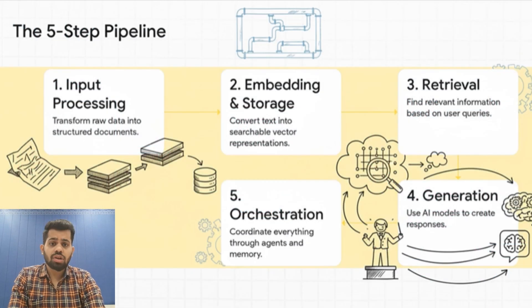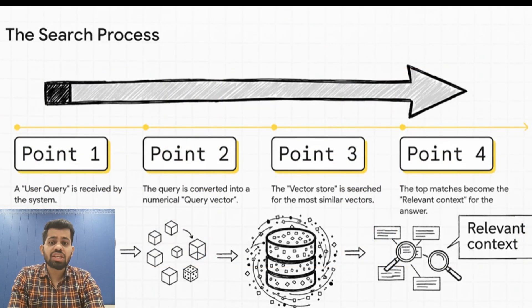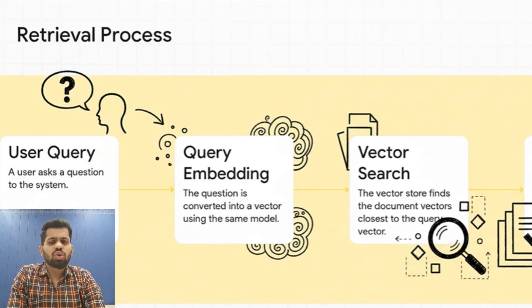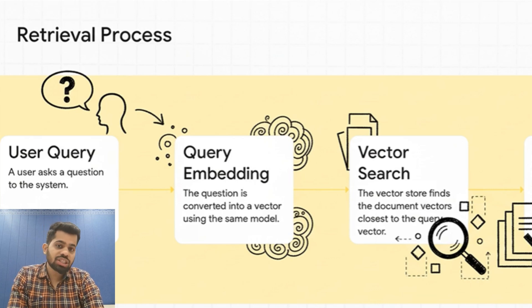When a user asks a question, we enter the retrieval phase. This is often the core of the retrieval augmented generation or RAG system. Everything in this stage starts with the user query. Someone asks a question, and that query needs to be matched against your stored documents to find relevant information. But here is something crucial: you need to use the same embedding model for queries as used for the documents. Why? Because embeddings are only comparable within the same model. If you embed your documents with OpenAI but try to search with query embeddings, you are comparing apples to oranges.